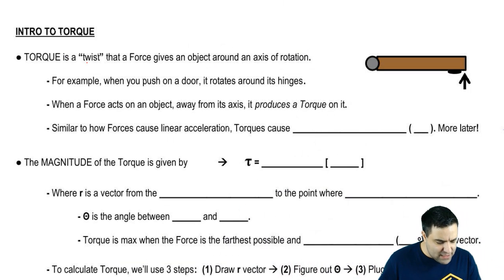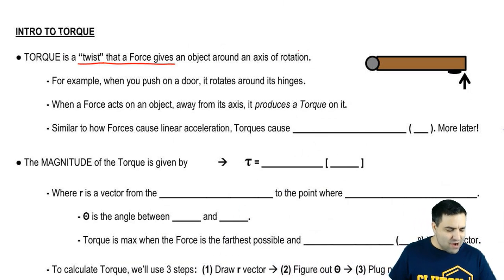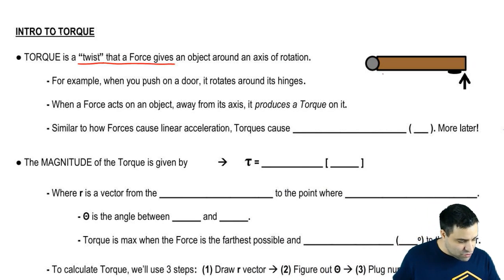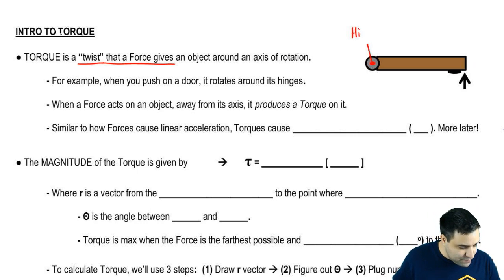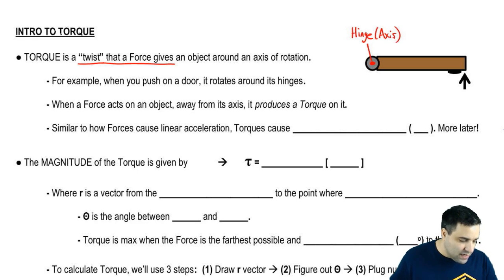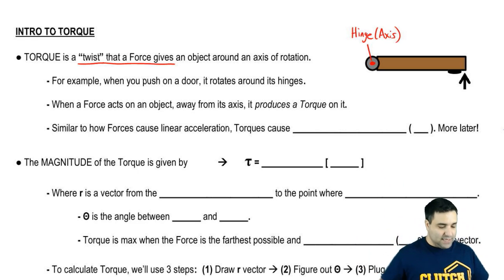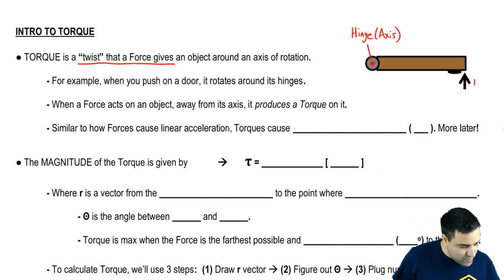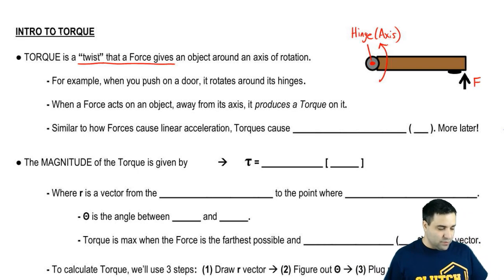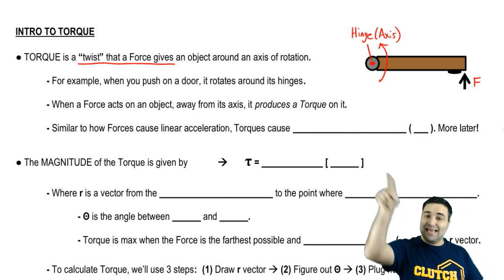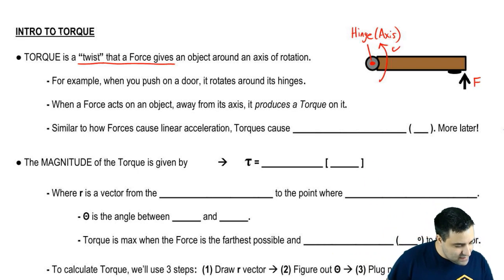You can think of torque as a twist that a force gives an object around an axis of rotation. Here's the most classic example: if you have a door that is fixed around an axis here — this is the hinge of the door, which is also its axis of rotation — and if you push with a force F, it causes the door to spin this way, meaning the door accelerates and gains an alpha.